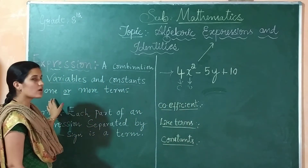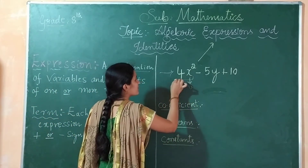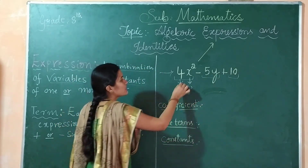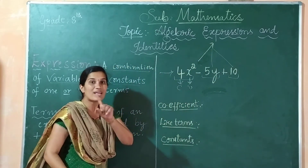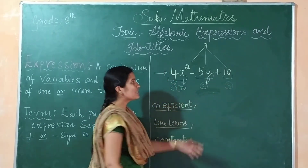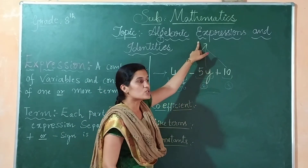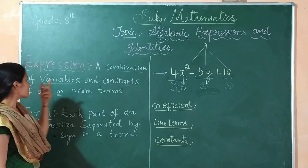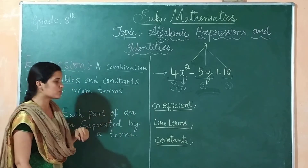When these two combine together — when these two combine together — if one or more terms, this forms one expression. This is the 1st term, this is the 2nd term, and this is the 3rd term. These 3 terms combine together to form one expression. So we can say the expression is a combination of variables and constants of one or more terms.